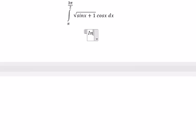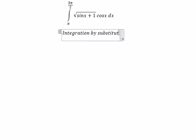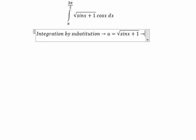We need to use integration by substitution. So we put u equals the square root. Then we square both sides.